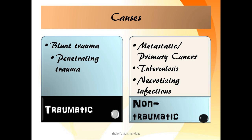There can be many reasons why a patient presents with hemothorax. I have categorized them into two groups: traumatic and non-traumatic. Traumatic causes include blunt trauma and penetrating trauma, such as a bullet injury or a stab injury. Non-traumatic causes include primary carcinoma of the lung, metastatic carcinoma, tuberculosis, and necrotizing infections.